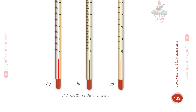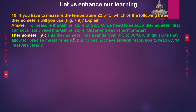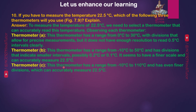Question 10: If you have to measure the temperature of 22.5 degrees Celsius, which of the three thermometers in Figure 7.9 will you use? Thermometer A has a range from 0 to 30 degrees Celsius but lacks the resolution to read 0.5 degree Celsius intervals clearly. Thermometer B has a range from minus 10 to 50 degrees Celsius with finer divisions of possibly 0.2 or 0.1 degrees Celsius and can accurately measure 22.5 degrees Celsius. Thermometer C has a range from minus 10 to 110 degrees Celsius with even finer divisions, also capable of accurately measuring 22.5 degrees Celsius.